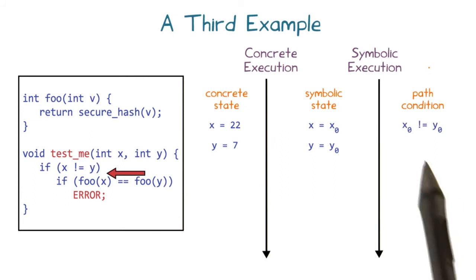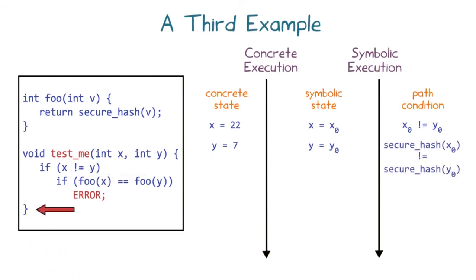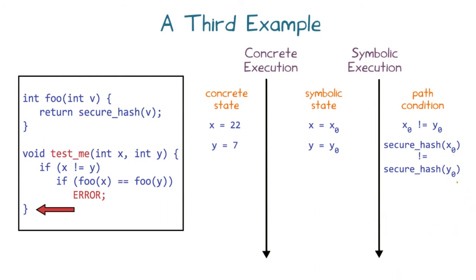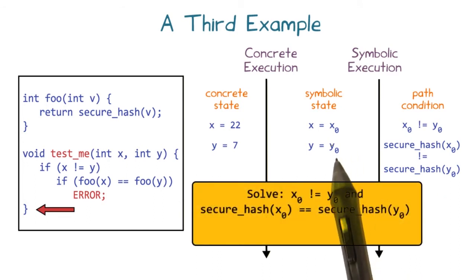Since the concrete values of x and y are different, the true branch is taken, adding the symbolic constraint 'x0 does not equal y0' to the path condition. At the second condition, the outputs of foo of 22 and foo of 7 differ, so we take the false branch and add the symbolic constraint 'secure hash of x0 does not equal secure hash of y0'. To take the true branch, we need to find x0 and y0 with the same secure hash but x0 not equal to y0.